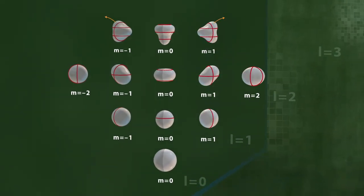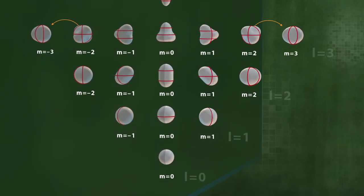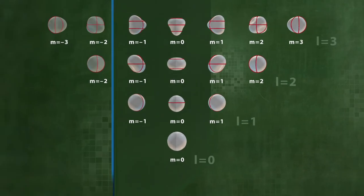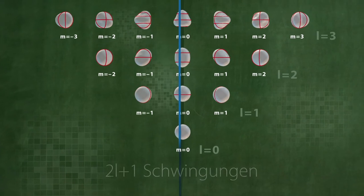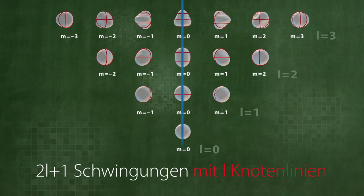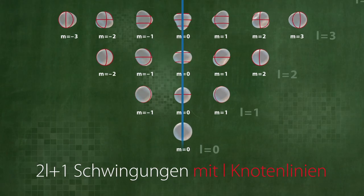In the case of three nodal lines, we can rotate first one line, then two, then all three nodal lines to the right and reflect their image to the left. There are thus 2L plus one potential modes of vibration on the spherical surface with L nodal lines.